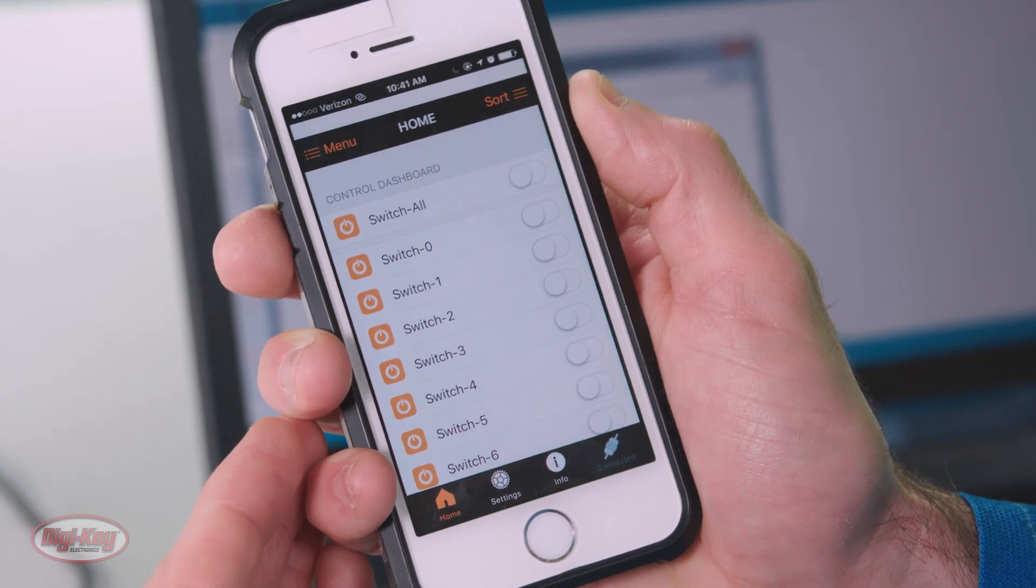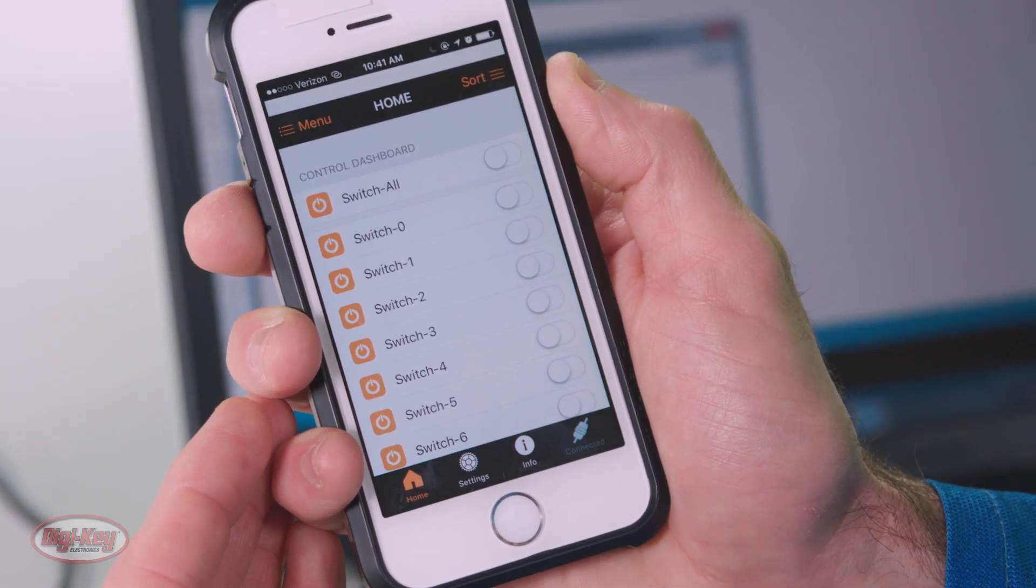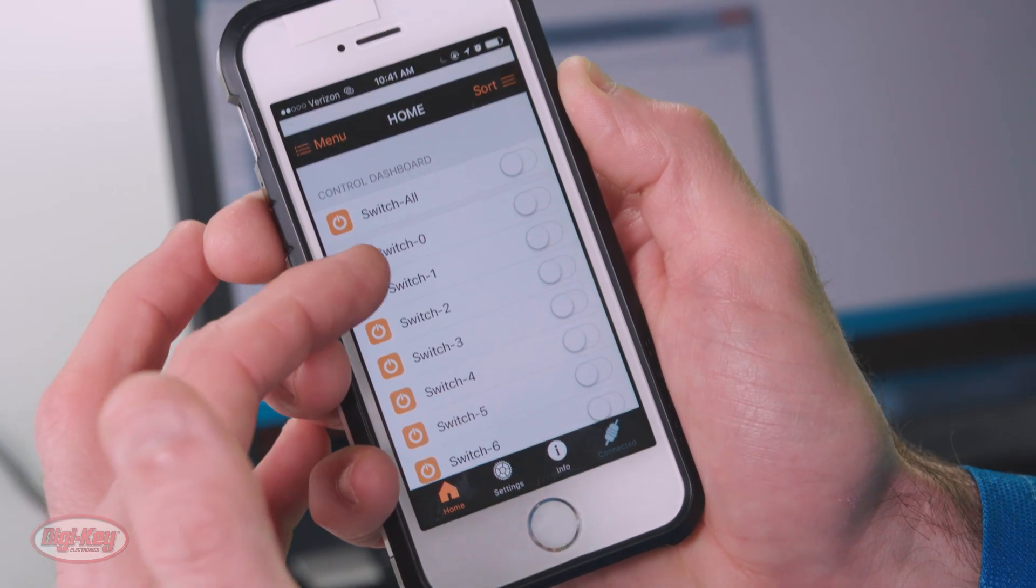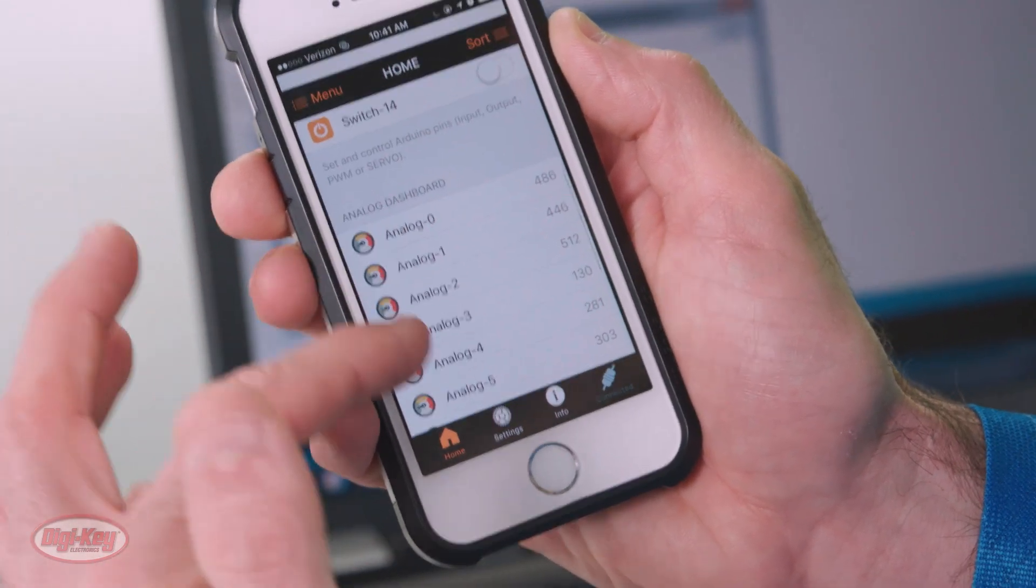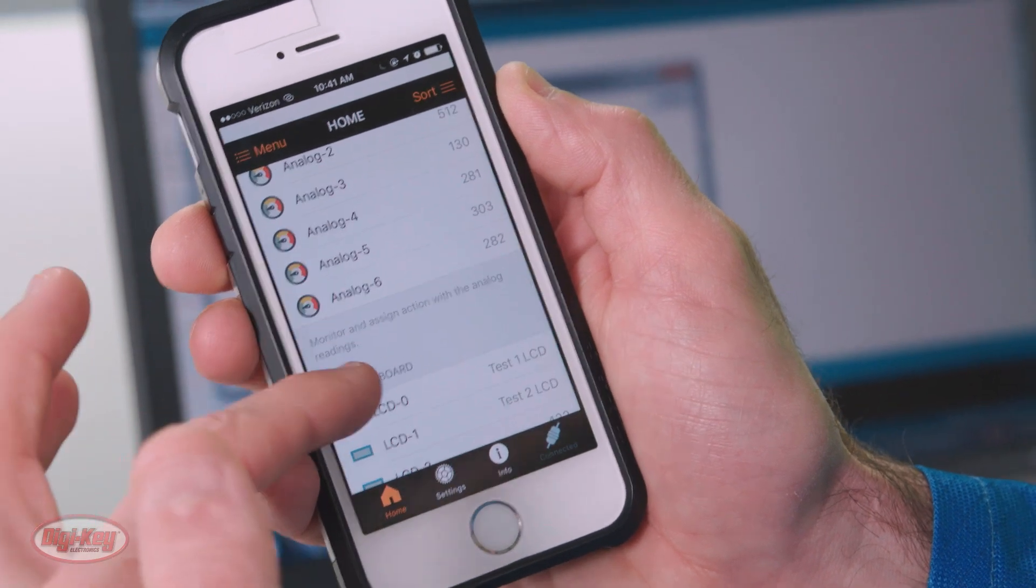And at this point, we can see all the features that this app offers. So these are digital I/O switches. Down below, these are analog I/Os, LCD, and then a serial monitor terminal.